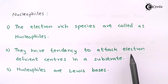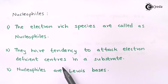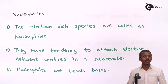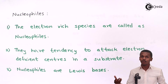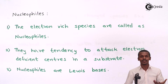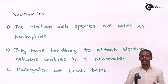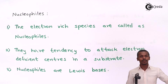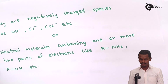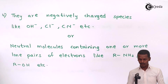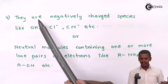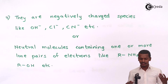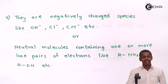Nucleophiles have the tendency to attack electron-deficient centers or positively charged centers in a substrate. Nucleophiles are known as Lewis bases because they have a lone pair of electrons and the tendency to donate electrons to more electron-deficient species. Examples of negatively charged nucleophiles include OH⁻ and Cl⁻ — these negatively charged species are known as nucleophiles.